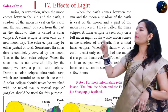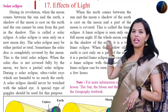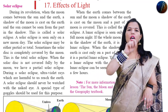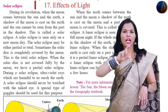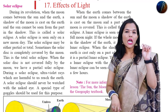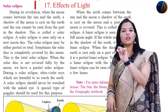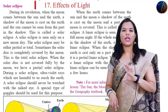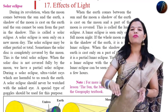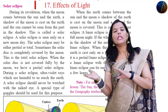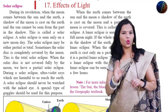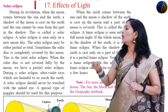In Solar Eclipse, first we have the definition. The order is Sun, Moon, Earth. In the definition, when the Sun, Moon, and Earth come in a straight line, then the shadow of the Moon falls on the Earth. This type of condition is called as the Solar Eclipse.